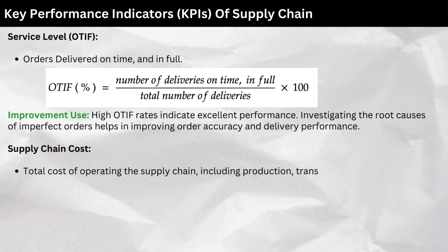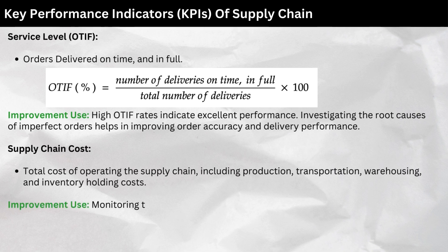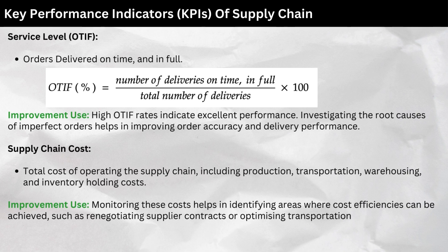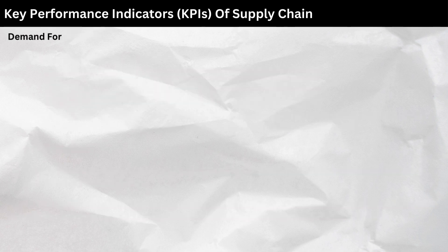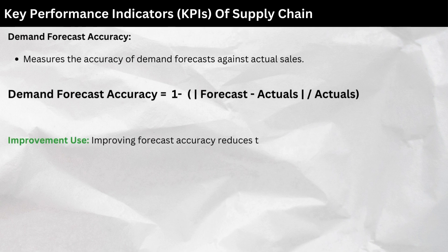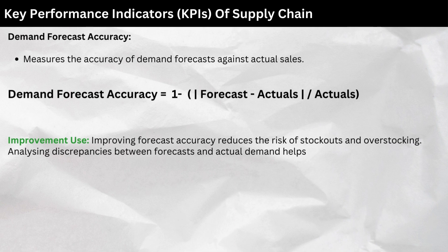Supply chain cost: Total cost of operating the supply chain, including production, transportation, warehousing, and inventory holding costs. Monitoring these costs helps identify areas where cost efficiencies can be achieved, such as renegotiating supplier contracts or optimizing transportation routes. Demand forecast accuracy: Measures the accuracy of demand forecasts against actual sales. Improving forecast accuracy reduces the risk of stockouts and overstocking. Analyzing discrepancies between forecasts and actual demand helps in refining forecasting methods.